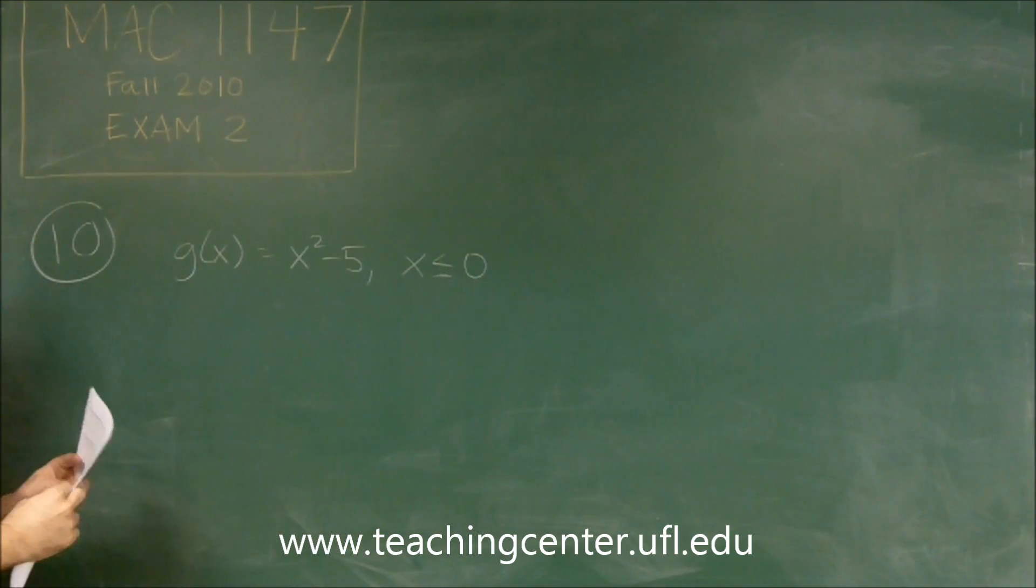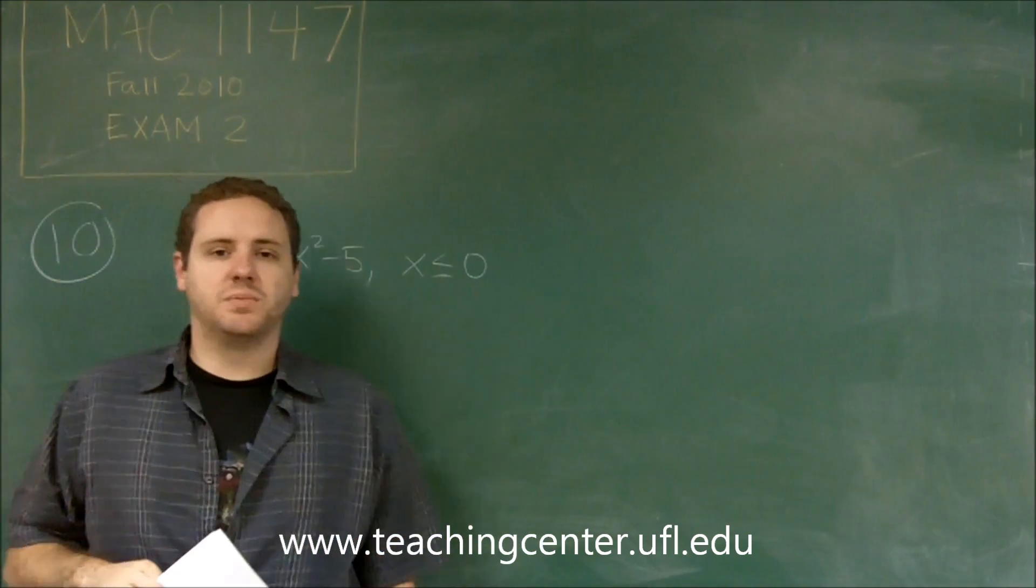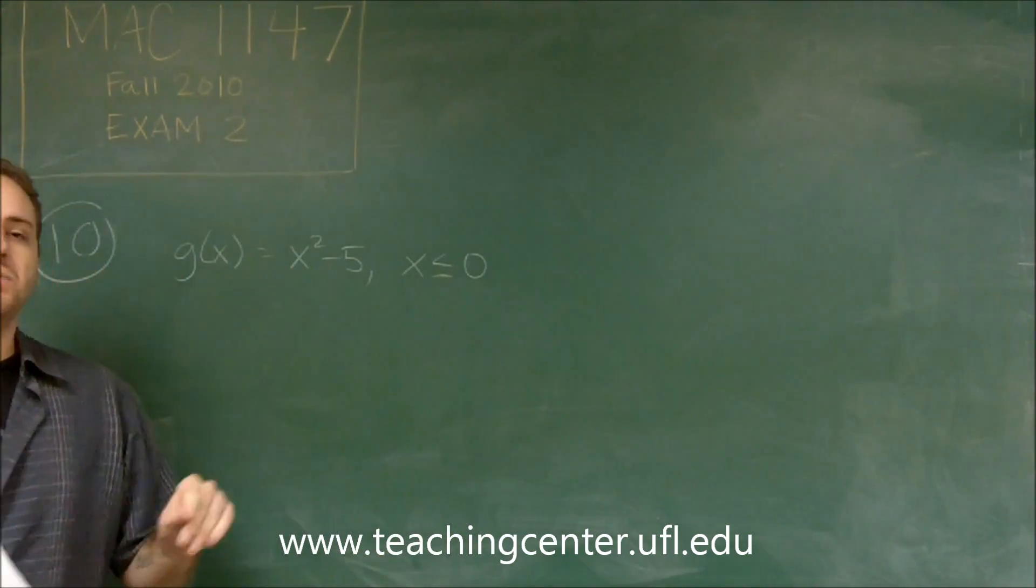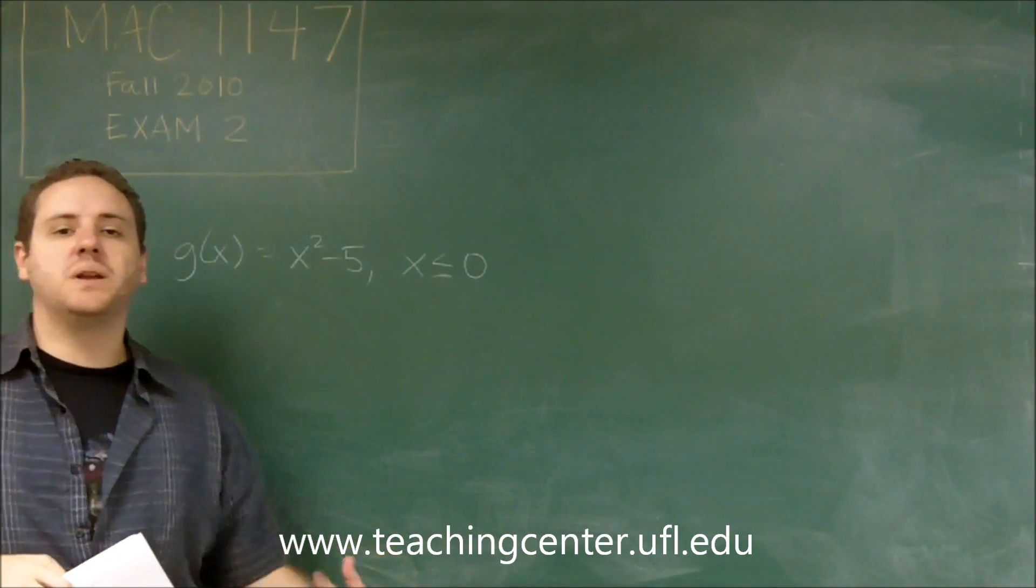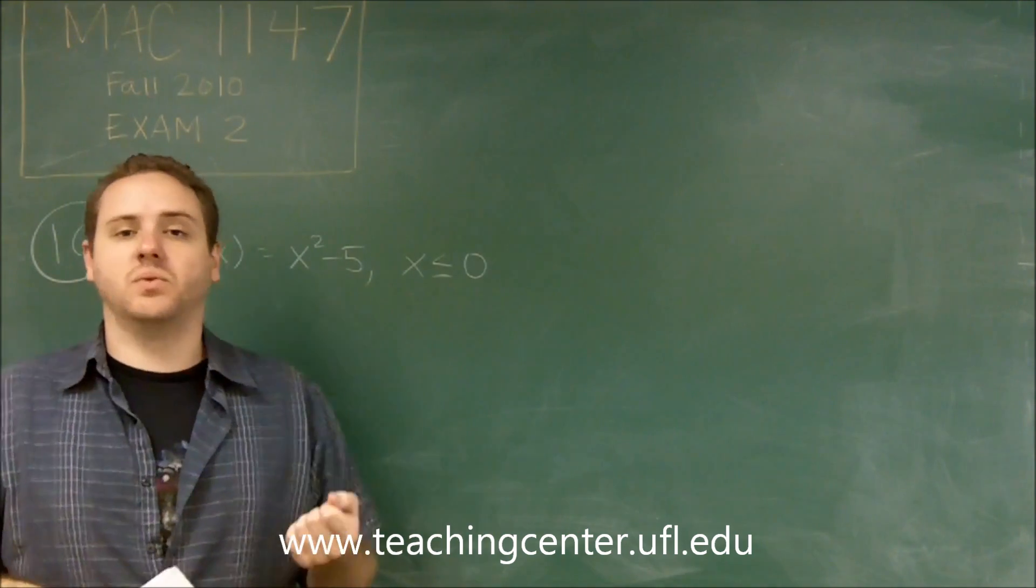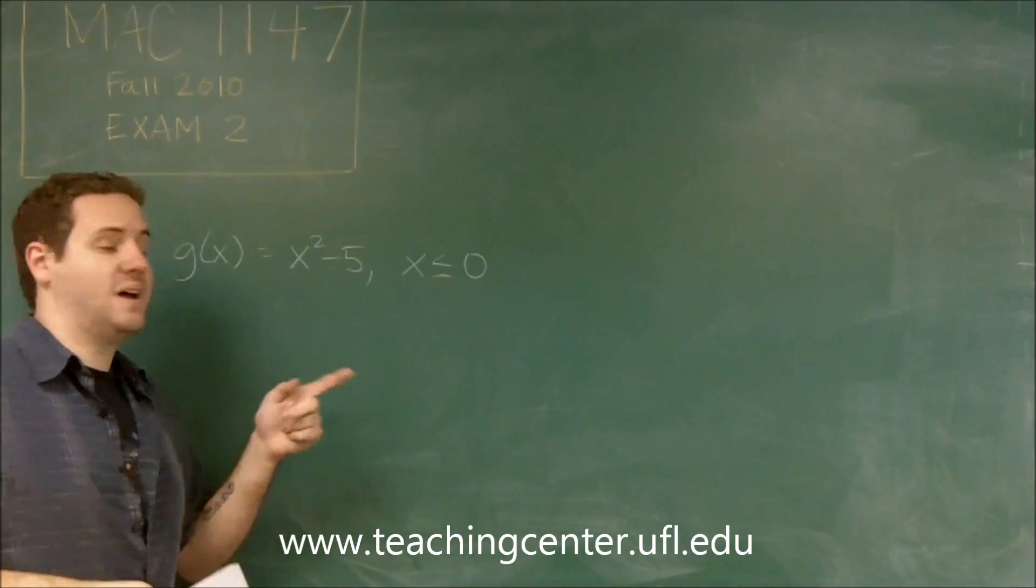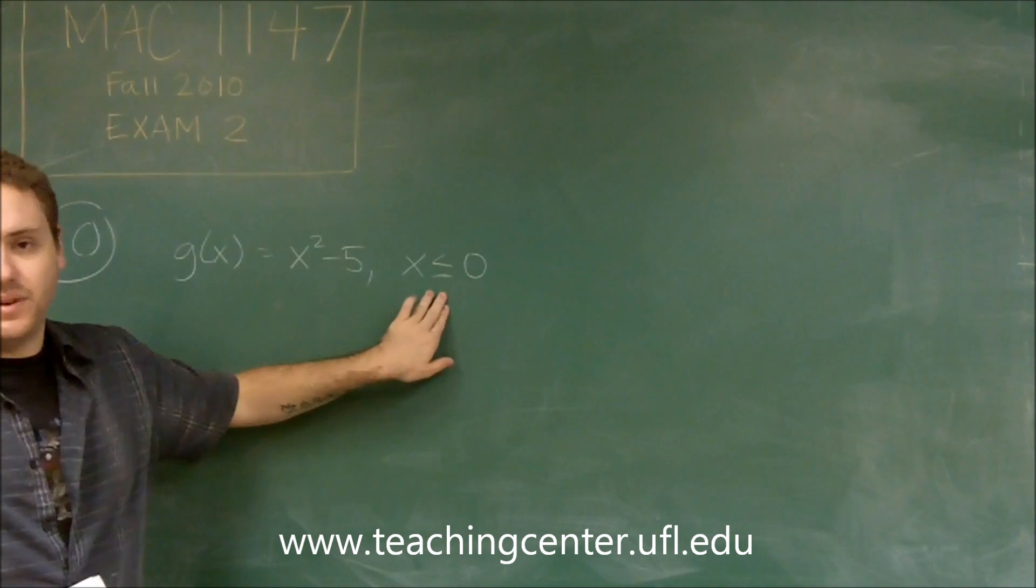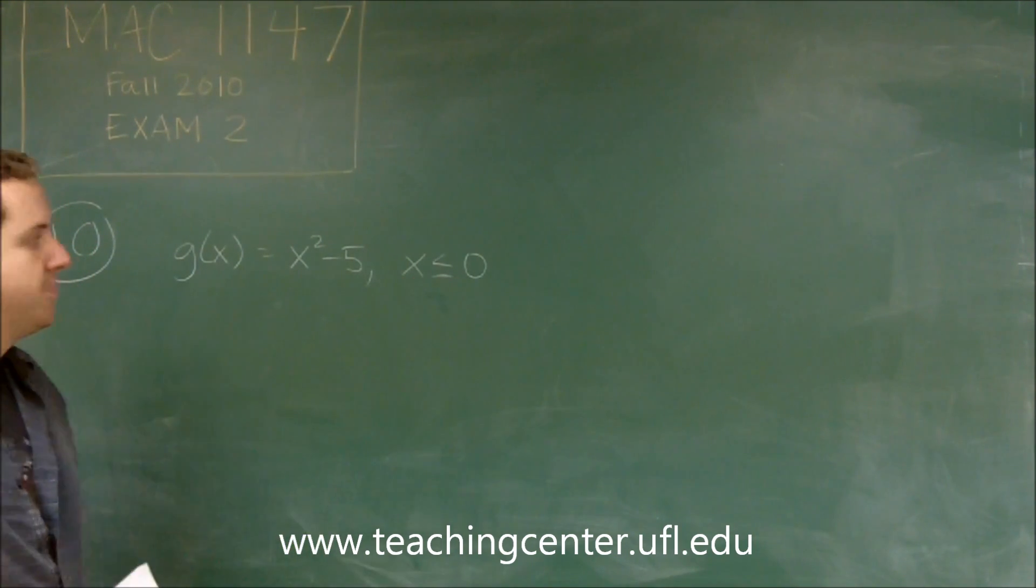So in other words, you can think of this as the left half of this parabola. Now that's really important in this problem because if you weren't given that, you wouldn't have an inverse function because it wouldn't be 1 to 1. A parabola is not 1 to 1 in general unless you cut half of it off, which is what we're doing here. So we only have the left half.